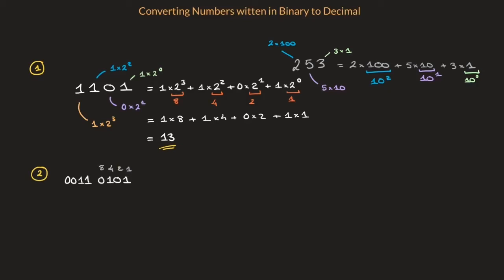And I carry on. 8 times 2 is 16. 16 times 2 is 32. 32 times 2 is 64. And finally, 64 times 2 is 128.